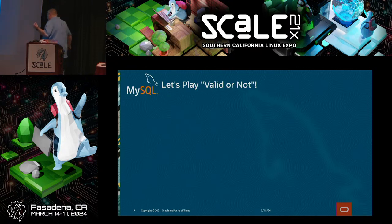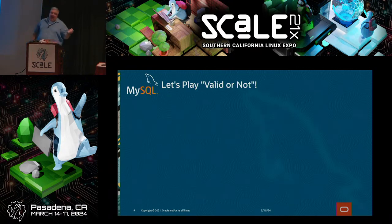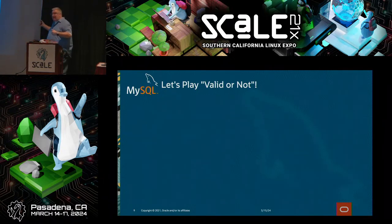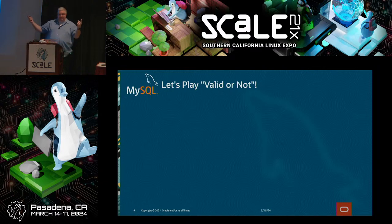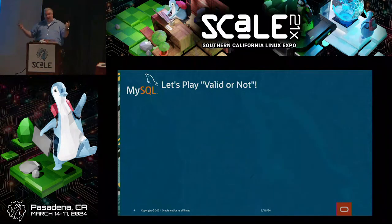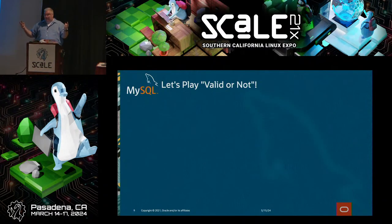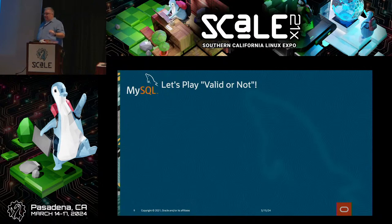We're going to play a game called Valid or Not. Here are the rules: I'm going to show you an example of some text, point to somebody, and that person is going to say valid or not. If you say anything besides those two things, you're wrong and I'll call on somebody else. If you get it right, you get a lollipop.